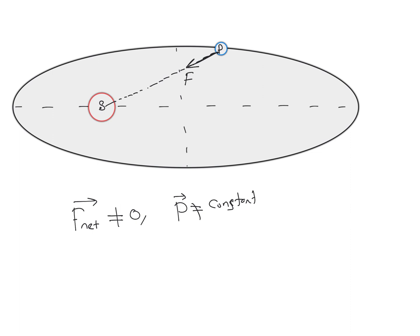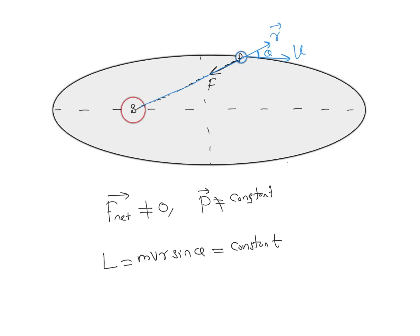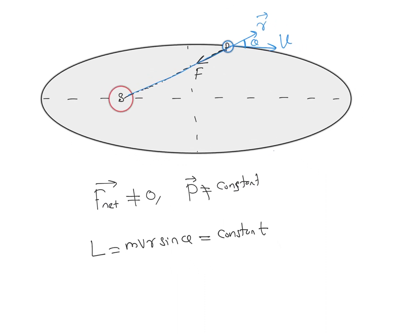We know how to find the angular momentum in rotational motion. At any instant, the satellite is moving with velocity v, its position vector is r, and the angle between r and v is theta. The angular momentum is L = mvr sinθ. When the planet is at the closest point to the sun, the distance r is minimum and the velocity vector and radius vector make an angle of 90 degrees, so sin 90 = 1.